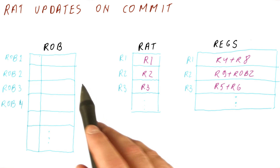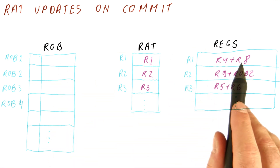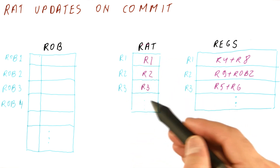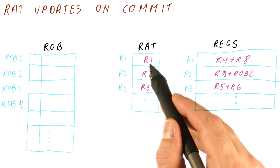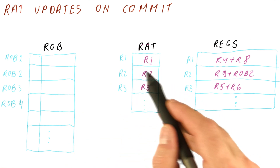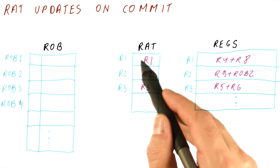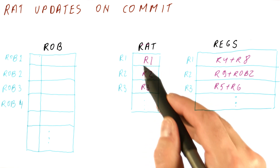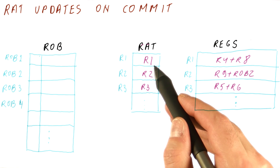When doing this, be mindful that values are always copied to registers as we commit, regardless of what the RAT says. But the RAT is updated on commit only if we are actually changing the renaming from our ROB entry to the registers. If the RAT is pointing to some other ROB entry, we leave it alone, because the RAT needs to continue to point to the latest value wherever that is.